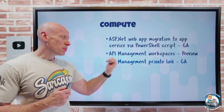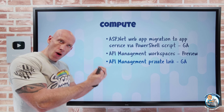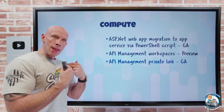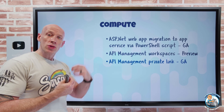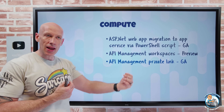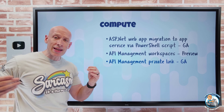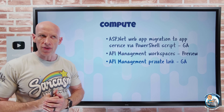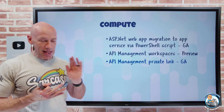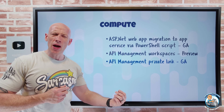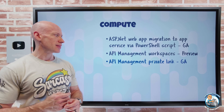API Management now also has private link support, and that's GA. Private link lets me have an IP address in my virtual network that communicates to a specific instance of a service. The private endpoint talks to the gateway of a specific API manager, and I can turn off public access. This works on all SKUs — developer, basic, standard, and premium — whereas other network integration types only worked with developer and premium SKUs.